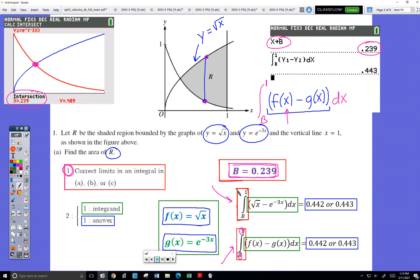That's one point. Then the integrand point here, the integrand point is for having the correct integrand. It could be this type, or my preference is f subtract g. Make sure you have these parentheses multiplied by dx. If you have that, one more point.